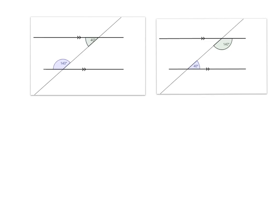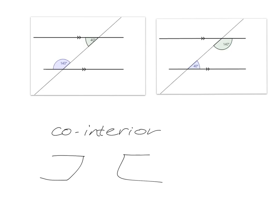The last angles we're going to look at are angles called co-interior angles on parallel lines. These are typified by a sort of U shape. You can see the U shape here, and your co-interior angles are on the inside of the U.